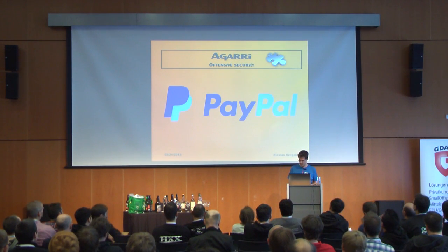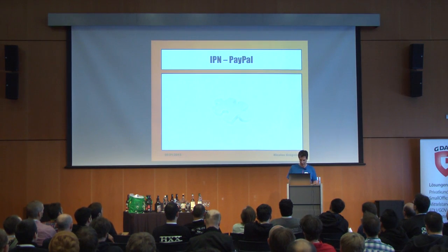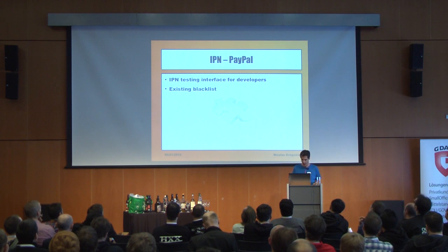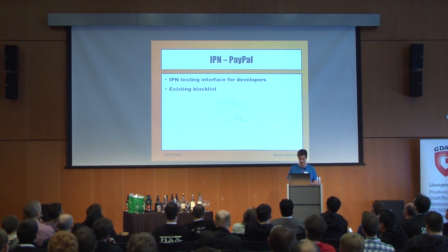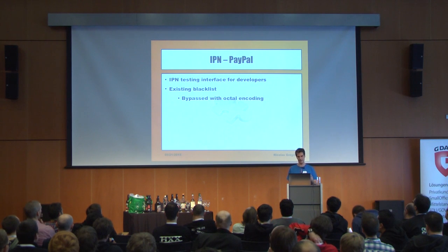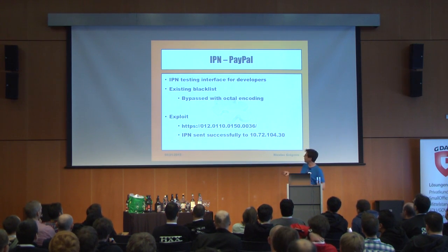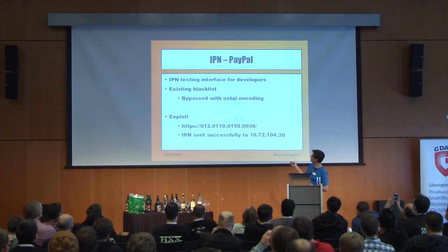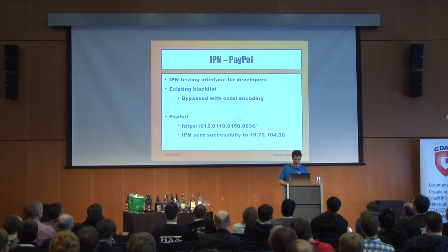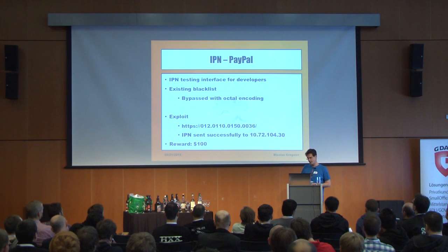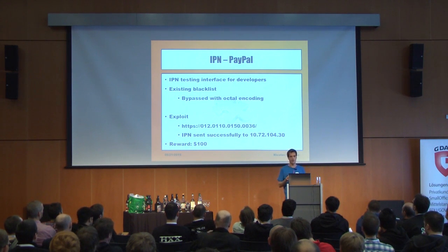PayPal — never do the bug bounty of PayPal, it's the worst one. They manage a lot of money. You have an interface for testing IPN requests, and they have a blacklist — of course, that's PayPal. But the blacklist can be bypassed with octal encoding. As a proof of concept, I sent an IPN to an internal IP address and got the feedback: 'IPN successfully sent to the decoded IP address.' Surprisingly, I did not fully exploit the bug because I was quite busy at that time, and I got only $100. I can reach PayPal's internal network and they gave me $100.